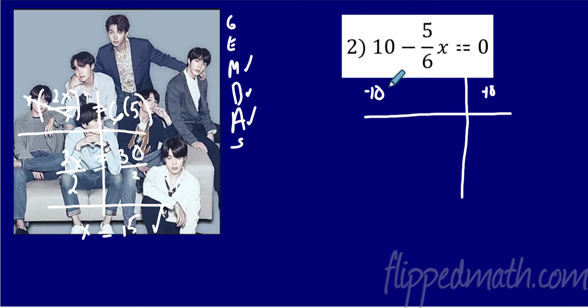So the very first thing we get, this crosses out. And we have negative 5 over 6 X equals 0 minus 10 is negative 10. That will be our first step.